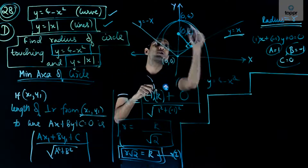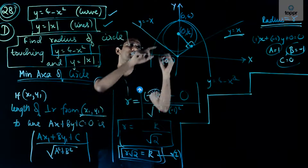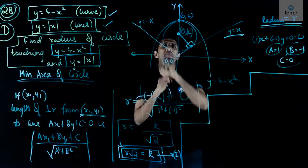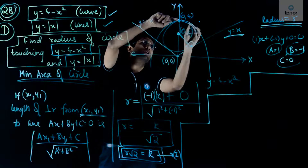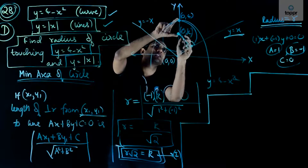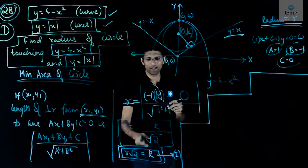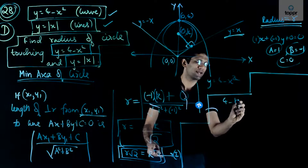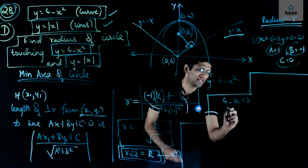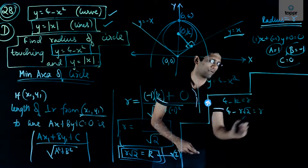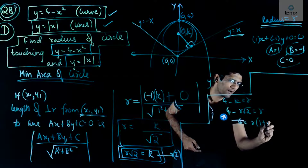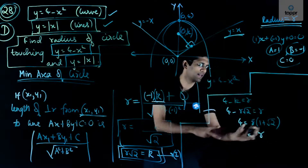For the circle with minimum area, it must touch the parabola at the topmost point (0, 4). The radius is then the vertical distance from the center (0, k) to (0, 4), which is 4 − k. So we equate: 4 − k = r. Substituting k = r√2 from Equation 1: 4 − r√2 = r, giving 4 = r(1 + √2).